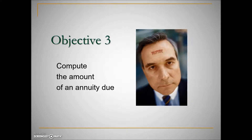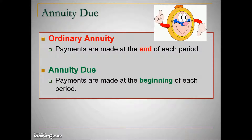In this lecture we'll take a look at what an annuity due is and also individual retirement accounts. We have two types of annuities: an ordinary annuity where the payments are made at the end of each period, and an annuity due where the payments are made at the beginning of the period.